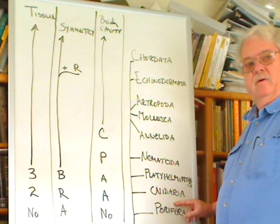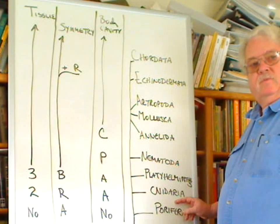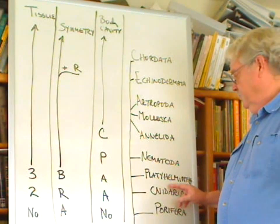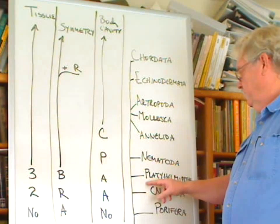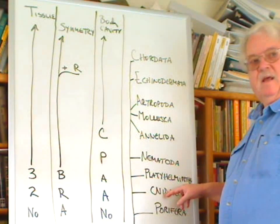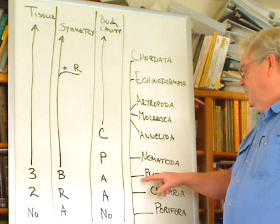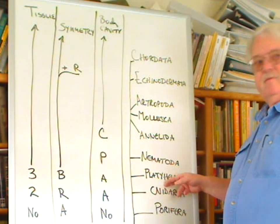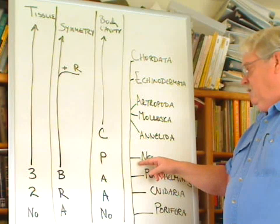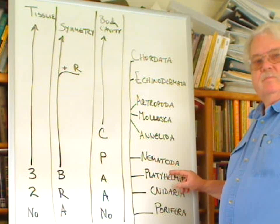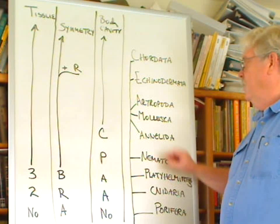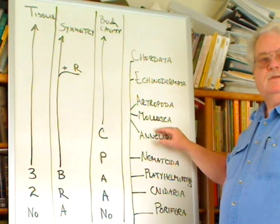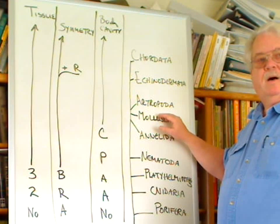The Cnidaria, which are the sea anemones, the corals, the Portuguese man-of-war, and jellyfish. The Platyhelminthes, the flatworms, including free-living and parasitic worms. The Nematoda, or roundworms. The annelids, mollusca, and arthropods, which are all relatives to each other.